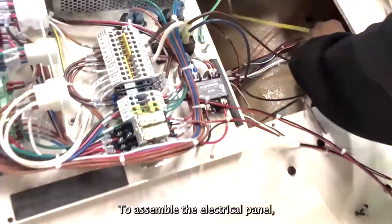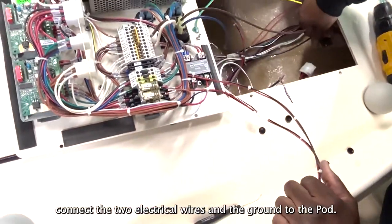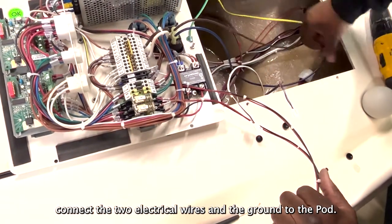To assemble the electrical panel, connect the two electrical wires and the ground to the pod.